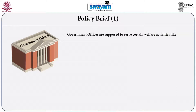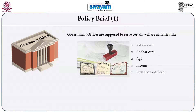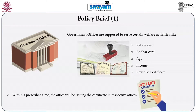All government offices are supposed to serve certain welfare activities like giving a ration card, a cash certificate, revenue certificate, income certificate, age certificate, so that a person is eligible to collect pension, and so forth. This is the duty of a department of the government. If you are a municipal corporation, you have to give permission for construction of houses. If you are a water supply department, you have to offer the connection.